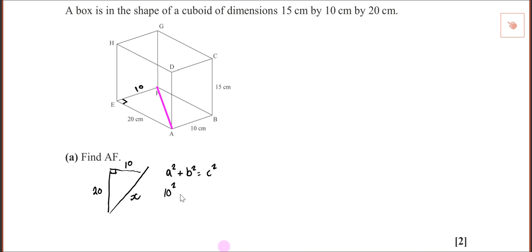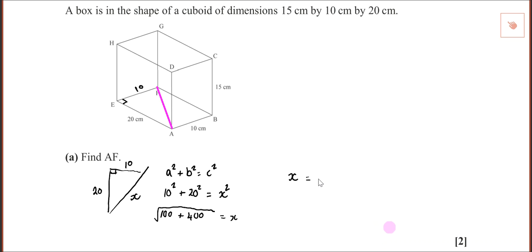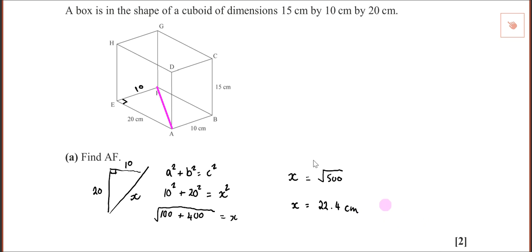So 100 plus 400 equals x squared, meaning x is the square root of 500, which is 22.4 centimetres. My tip: that's fine for your final answer, but keep the square root of 500 in mind for the next step.